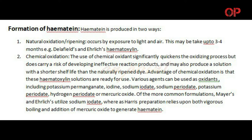Formation of hematein. Hematein is produced in two ways. 1. Natural oxidation or ripening, which occurs by exposure to light and air. This may take up to 3 to 4 months. Examples include Delafield's and Ehrlich's hematoxylin.